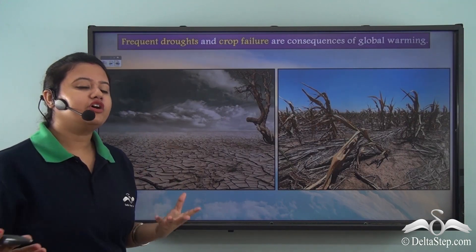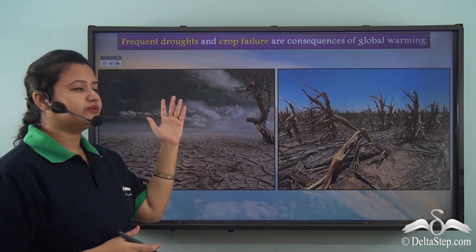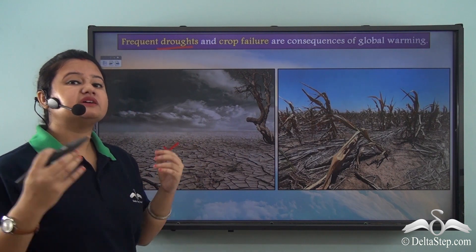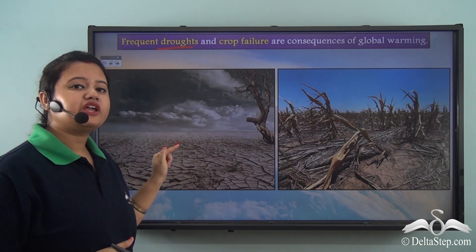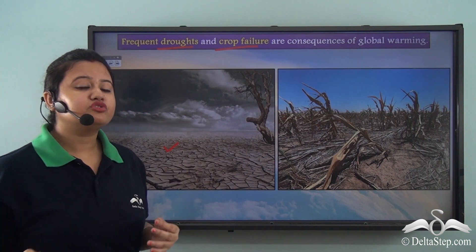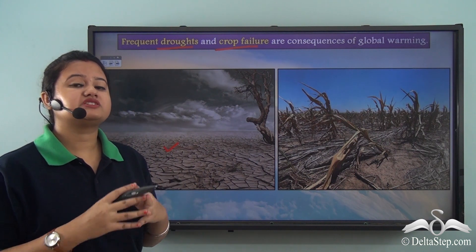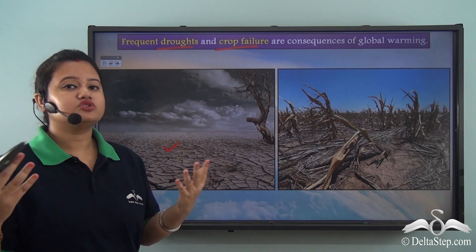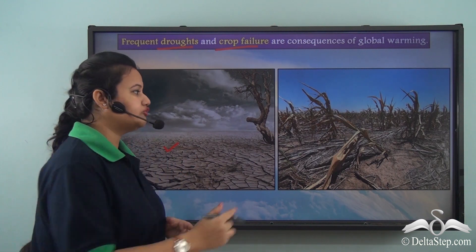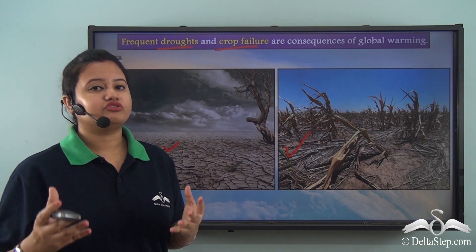Also, due to the overall rise in temperature, the soil dries up in several parts of the world as moisture evaporates from the soil, and this eventually leads to droughts. The soil is the medium for growth of plants, so frequent drought affects the growth of crops, leading to crop failure and food insecurity. Thus global warming intensifies water shortages in already water-stressed regions of the world, leading to crop failure and food insecurity.